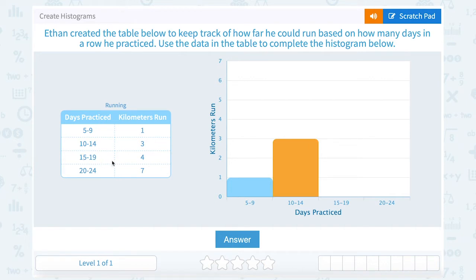For 15 to 19 days he ran four kilometers. Okay, so we're going to start dragging this up and making sure it reaches four on the y-axis. For 20 to 24 days practice he ran seven kilometers. So this one needs to reach all the way up to seven.